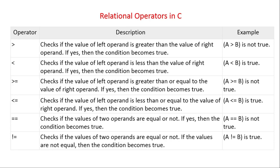There are six types of relational operators in C. The first one is greater than, then less than, then greater than or equal to, less than or equal to, equal to equal to (==), and not equal to. These are the six types of relational operators in C or any other language.